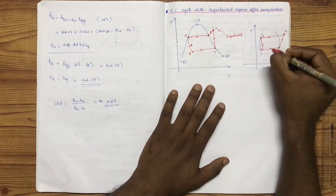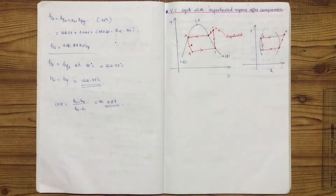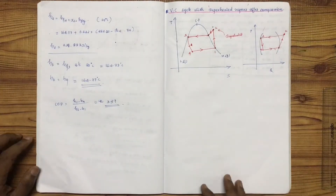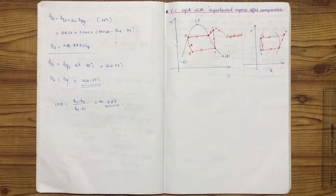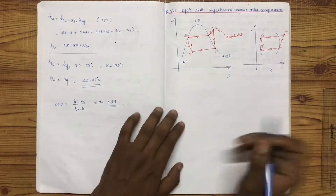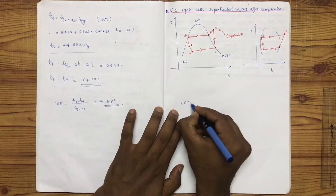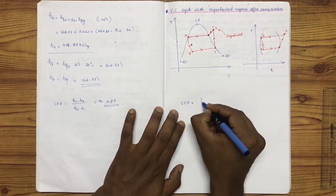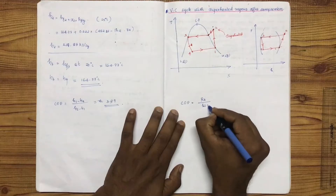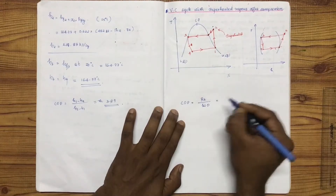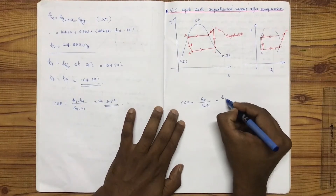You can use the P-H diagram to find how much heat is involved. The air flow relates to temperature, and the pressure on the refrigerant is equal to the refrigeration activity.